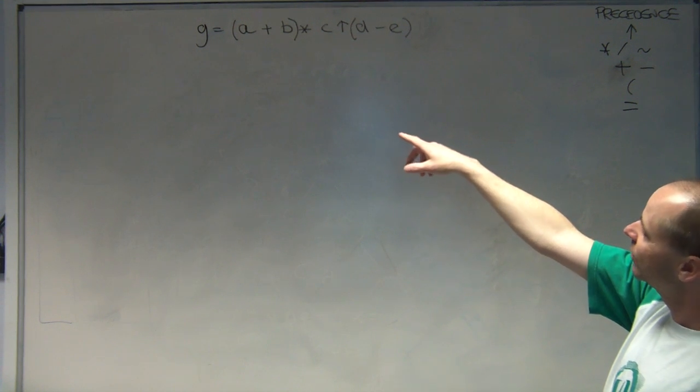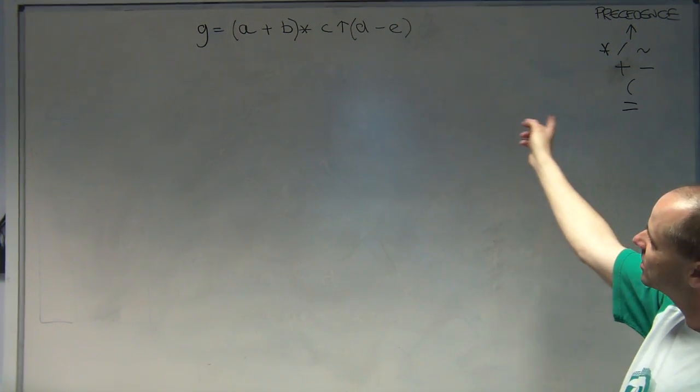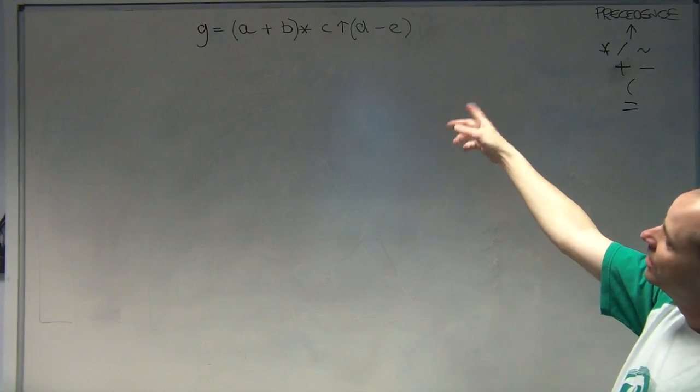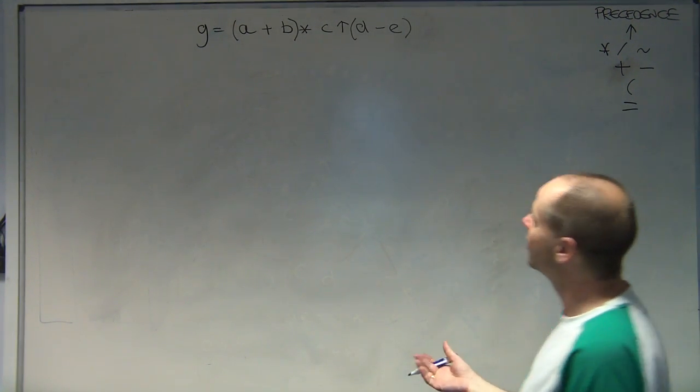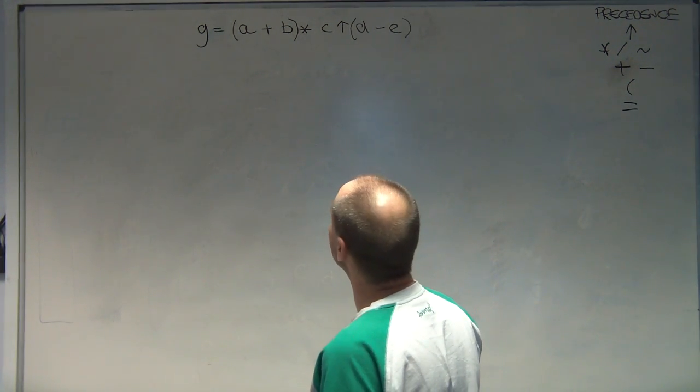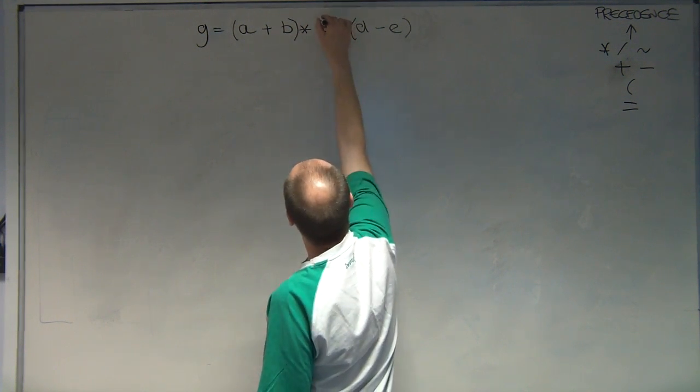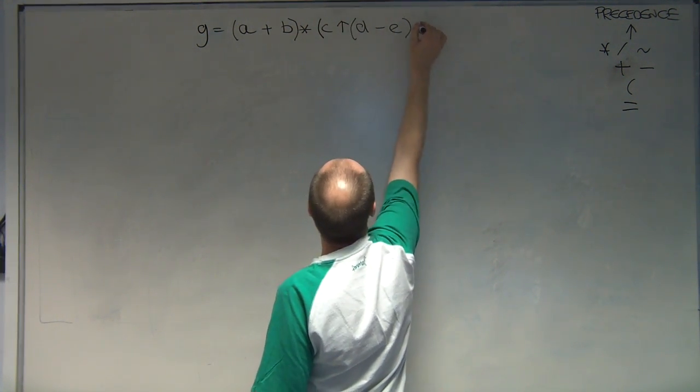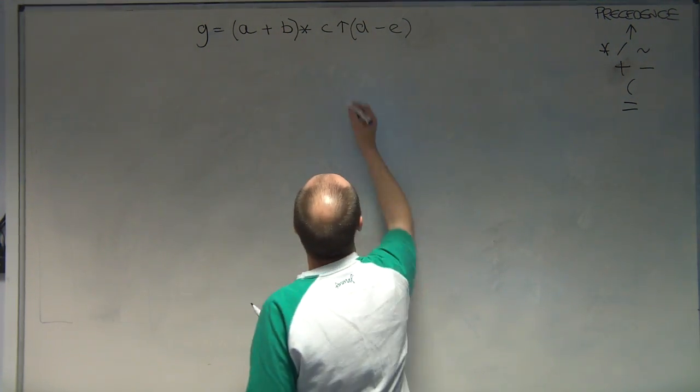So this is the expression we've got. We've got an assignment in G of this right hand side, and we've got a couple of brackets there to override precedence. What we first do is we put brackets in to show the order that the instructions are going to get done. So we know we're going to do the power before that, so we're going to put an extra bracket in. I'm going to do these in different colour actually, so I know that they're the ones I've added on.